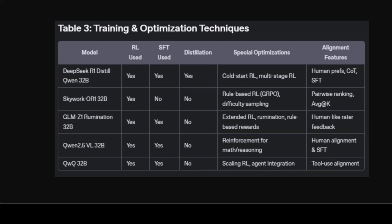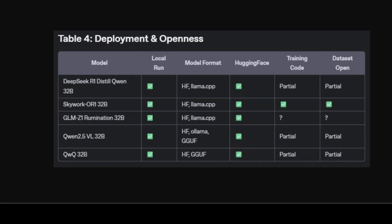Qwen's models integrate RL with standard supervised fine-tuning, with QWQ scaling RL for agentic tool use. I will also mention a closely kept secret from frontier labs around these 32 billion models at the end of the video. Looking at deployment and openness: all of these models run locally on properly provisioned hardware. Skywork OR1 is exceptionally open — code, dataset, and weights are all publicly available. All models are on Hugging Face and model scope and integrate well with community toolchains, but for true reproducibility and hackability, Skywork leads, with DeepSeek and GLM partially there.